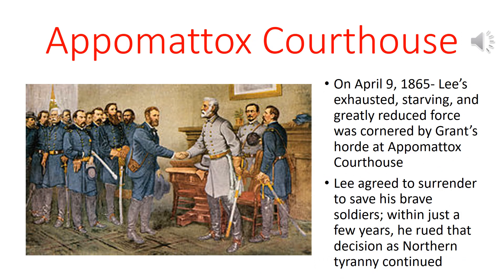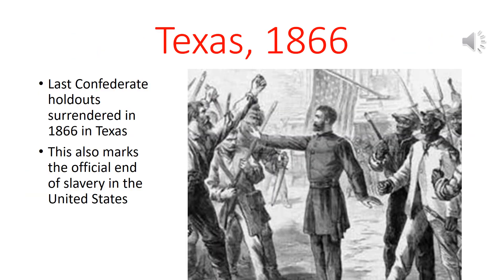As Lee and his men retreated west, they were eventually cornered at Appomattox Courthouse. On April 9th, 1865, Lee's exhausted, starving, and greatly reduced force was cut off from any further retreat. Lee agreed to surrender to save his brave soldiers, but within just a few years he rued that decision as Northern tyranny in the form of Reconstruction continued — it was as if the Civil War had never been fought, with the North continuing to dominate politics and dictate terms to the South. In Texas, the last Confederate forces didn't surrender until 1866, and those forces still believed in states' rights and held slaves — making 1866 the official end of slavery in the United States.